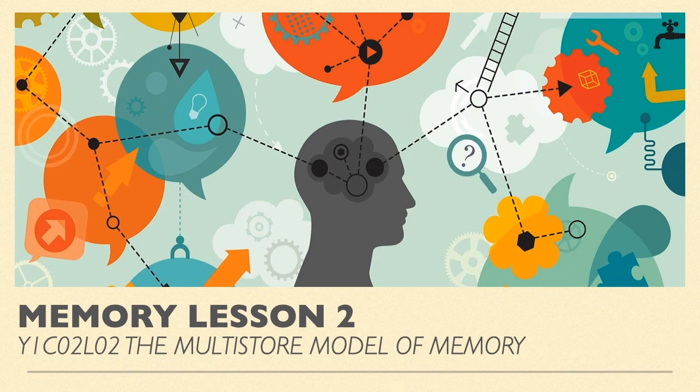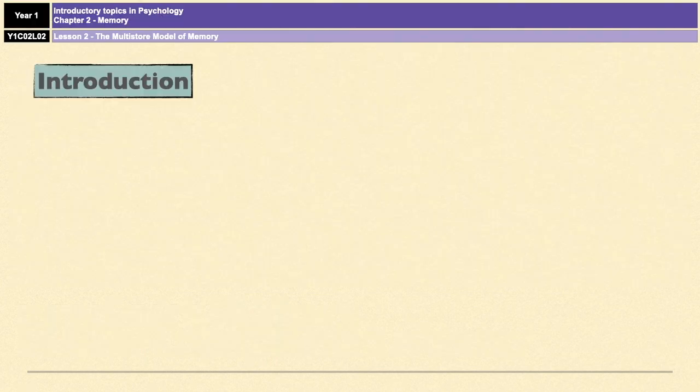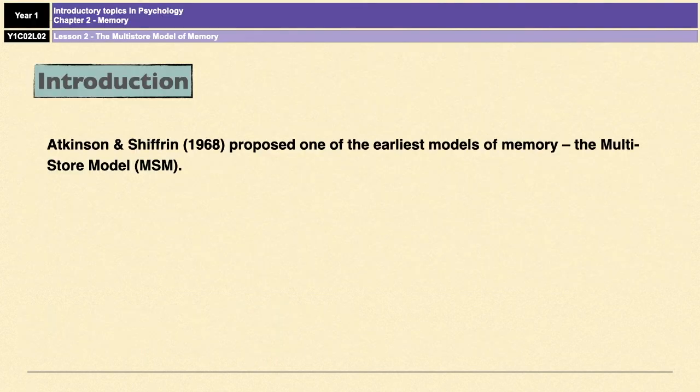Hello and welcome to memory lesson two, where we are going to cover the multi-store model of memory. The multi-store model of memory was first proposed by Atkinson and Shiffrin in 1968, and it is one of the earliest models of memory that was ever created.